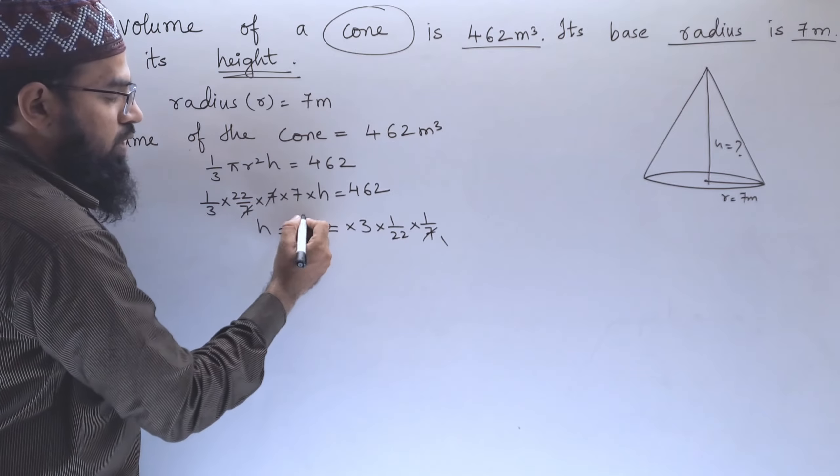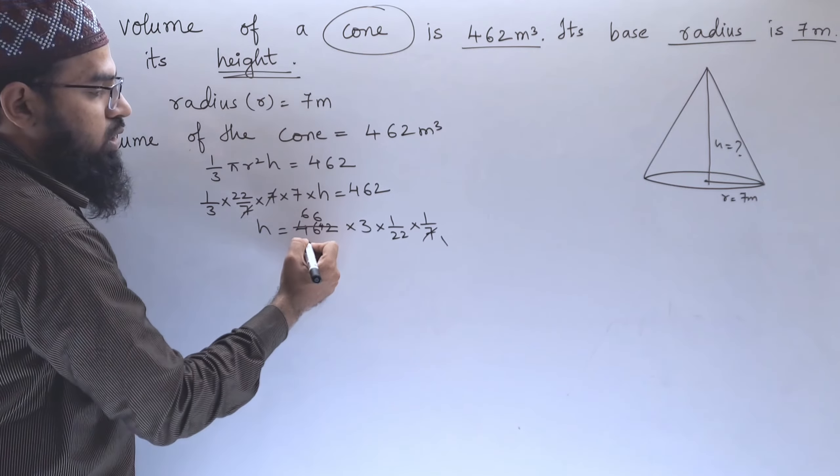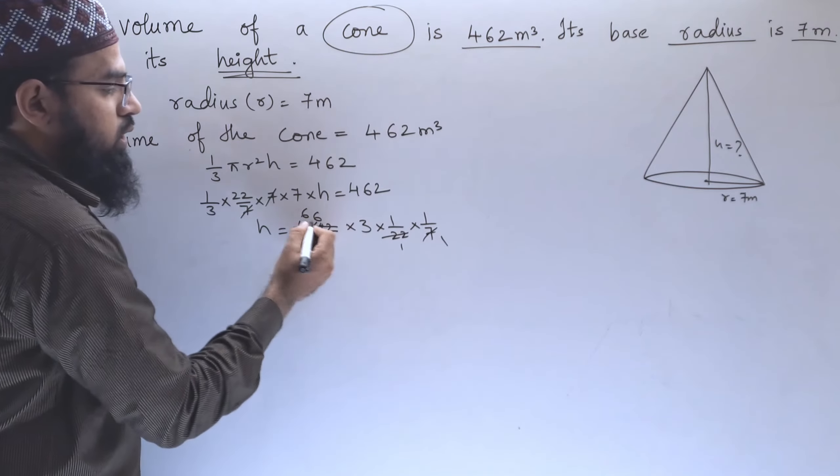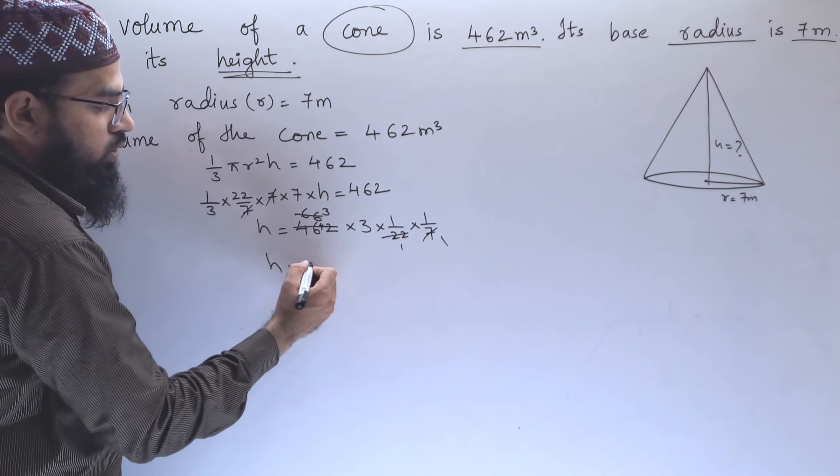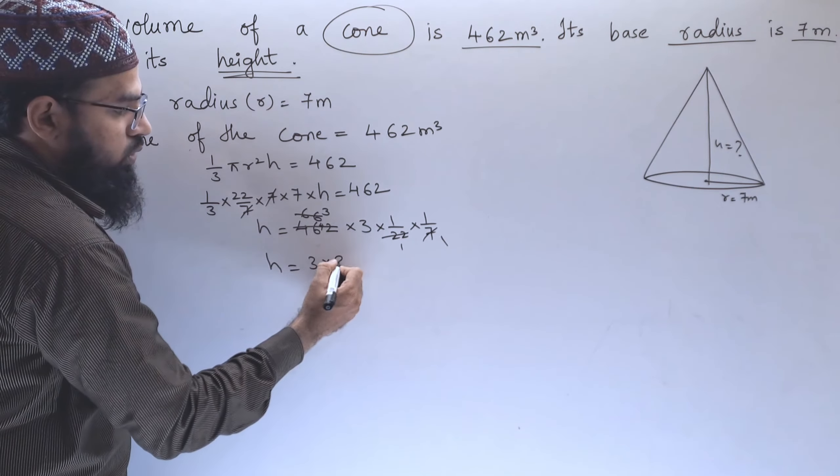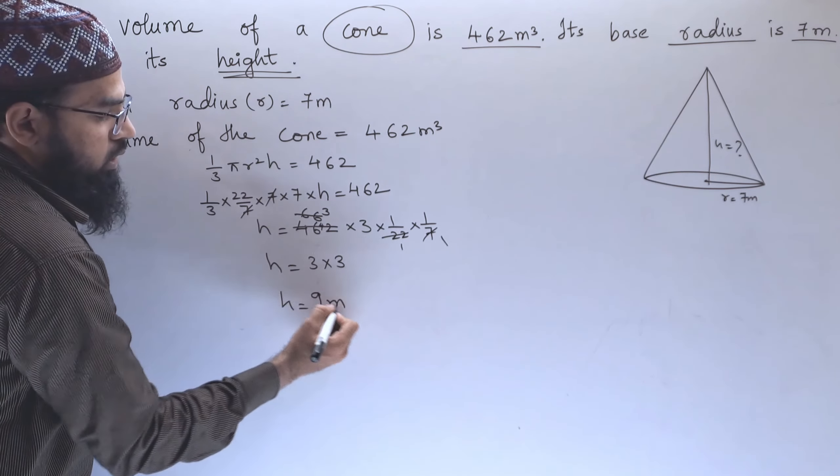7. 1 sevens are 7, 7 sixes are 42, so 4 left. 7 sixes are 42, 22 ones are 22, 3 is up. Therefore h equals 3 into 3, that is h equals 9 meters.